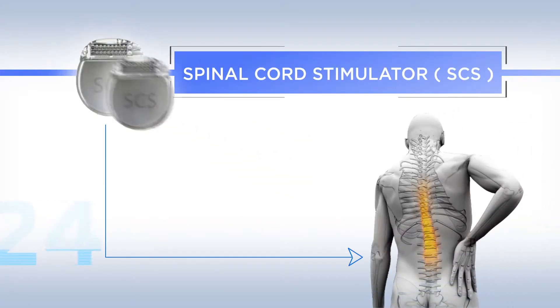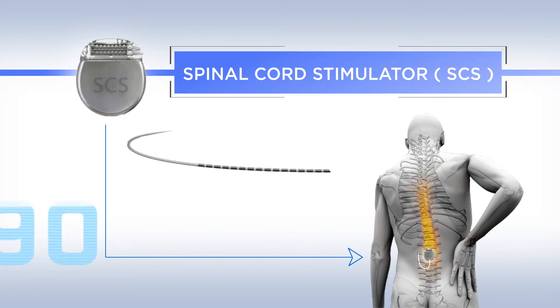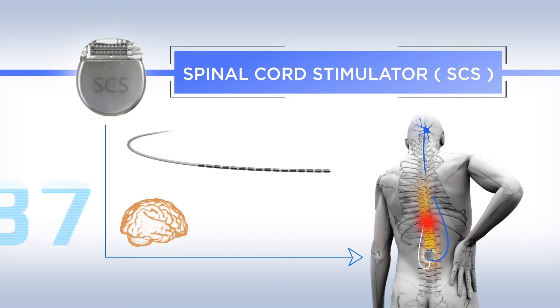A spinal cord stimulator, or SCS, is a small device implanted under your skin. Some are the size of a quarter. It's attached to a thin wire placed along the spinal cord up to the nerve that's causing pain. The stimulator creates a tingling sensation that masks pain signals to the brain.